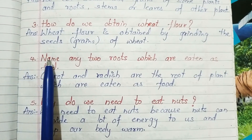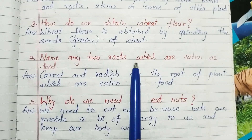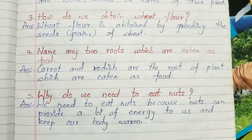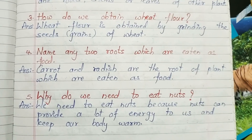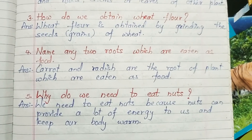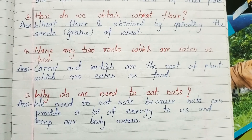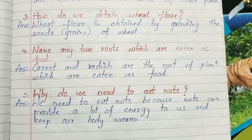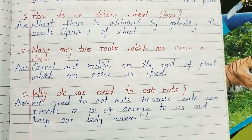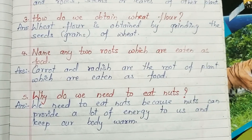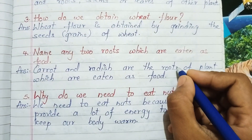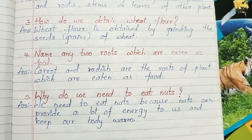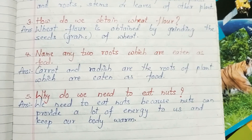Number 4, name any two roots which are eaten as food. Some of them are carrot and radish. You can write beetroot or turnip also. Carrot and radish are the two roots of a plant which are eaten as food.